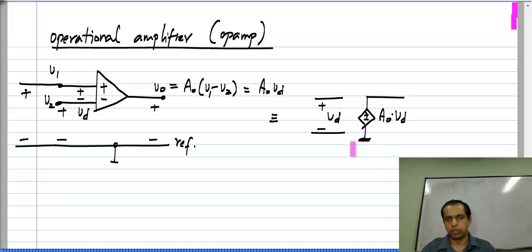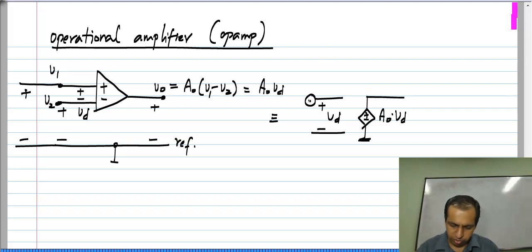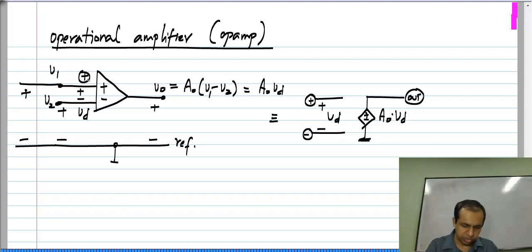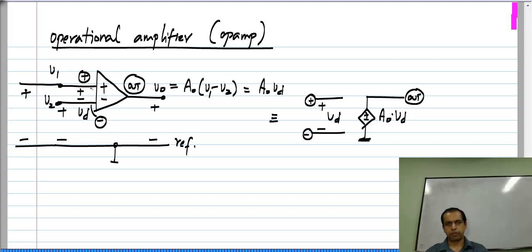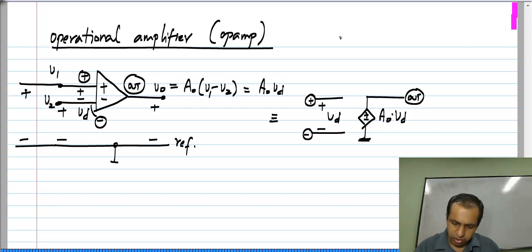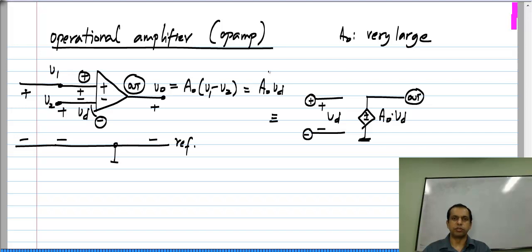One of the terminals of the controlled source — the bottom terminal as shown — is connected to ground, which is the common reference voltage, and this happens internally to the op amp; this is not a connection that you make. Three terminals are available to you: one is denoted plus, one is denoted minus, and one is the output. So an op amp is a voltage-controlled voltage source with a very high gain.